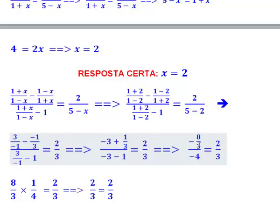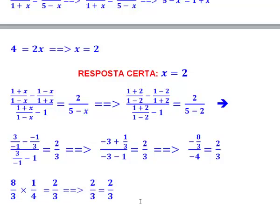Vamos ver se é. Olha só: 8 terços — menos com menos dá mais. Então eu tenho 8 terços vezes o inverso, 1 quarto. Vou simplificar: 8 por 2 vai dar 2; 2 vezes 1 dá 2 terços. 2 terços é igual a 2 terços — confira! E realmente a minha resposta está corretíssima. x igual a 2. Então, numa prova, se cair uma questão dessa, essa é uma forma de verificar se está certo, ou seja, não precisa nem de gabarito oficial. A gente verificou realmente que x é igual a 2.